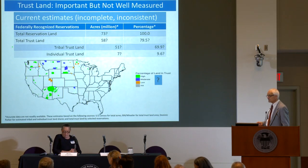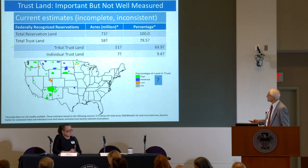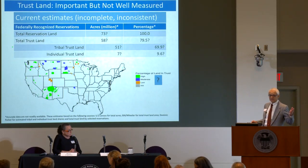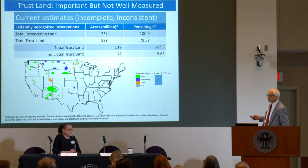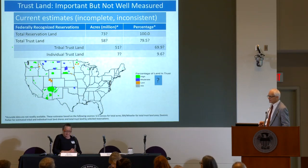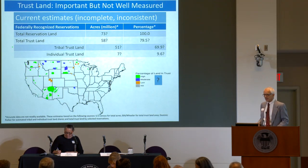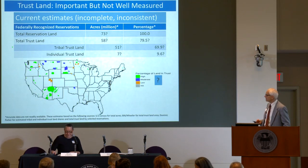The green areas here show a very high estimated percentage of trust land. The blue areas, which are still pretty big, have at least a moderate percentage of trust land. We had about 16,000 Home Mortgage Disclosure Act loans to American Indians in recent years, but only 300 to 350 on trust land. This is a huge resource base that is not being used very intensively for homeownership. We need to change that.